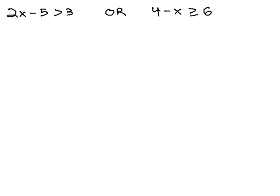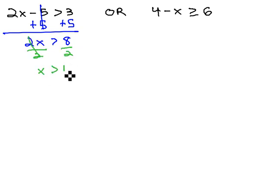We can start solving these inequalities much like we solved basic inequalities. By balancing, adding 5 to both sides on the first inequality, 2x minus 5 is greater than 3. When we add 5, we get 2x is greater than 8. And then finally, when we divide by 2, we get x is greater than 4.